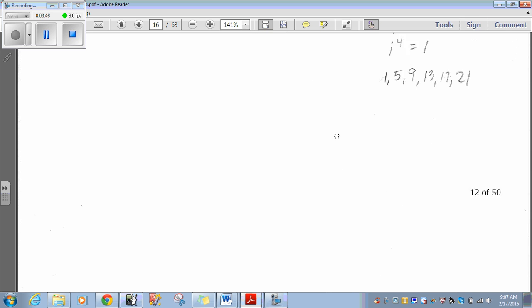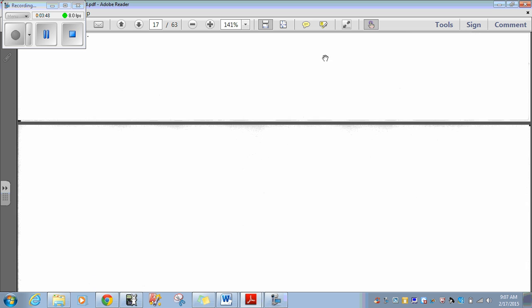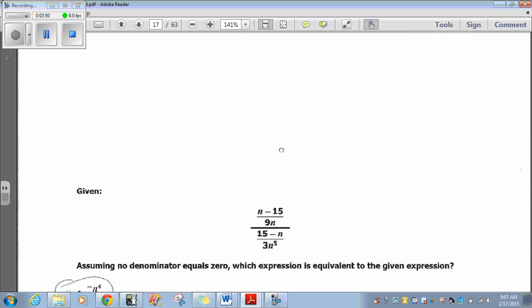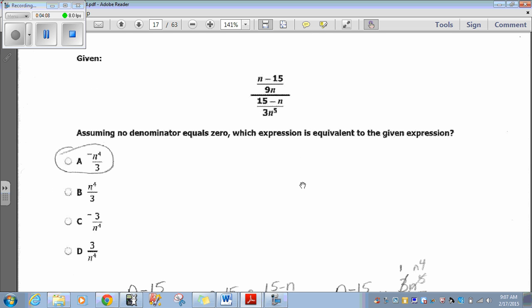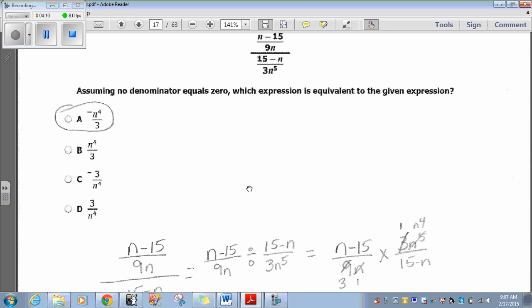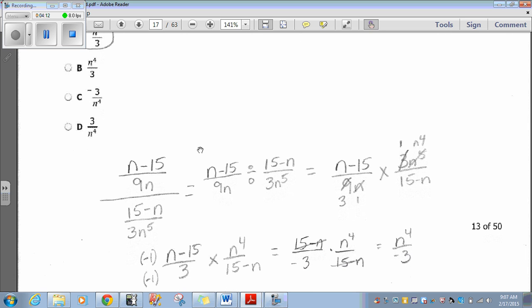Let's move on to question 13. Complex fraction. Assuming no denominator equals zero, which expression is equivalent to the given expression? We have n minus 15 over 9n divided by 15 minus n over 3n to the 5th.